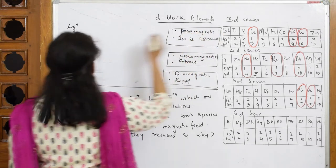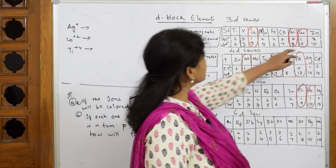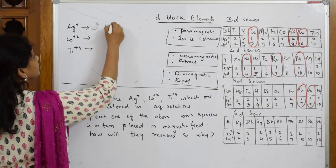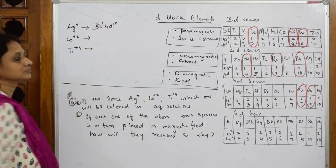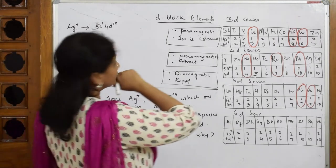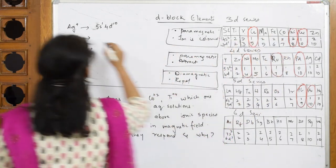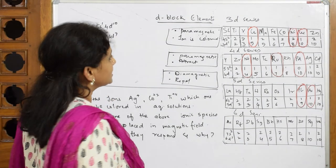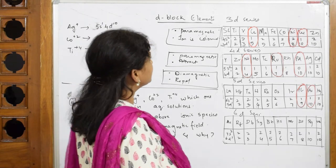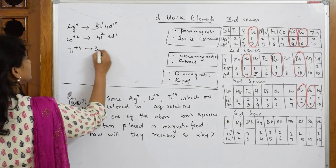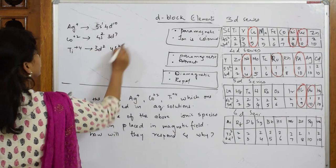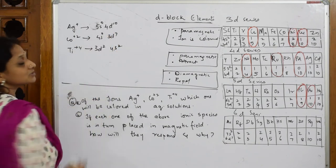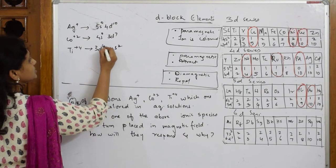Let us write the configurations. Silver: Ag+ has configuration 4d10 5s0 — the 5s1 electron is removed, giving a full 4d10. Cobalt: Co2+ starts as 3d7 4s2; removing two electrons from 4s gives 3d7 4s0. Titanium: Ti starts as 3d2 4s2; removing four electrons (first 4s2, then both 3d electrons) gives 3d0 4s0.